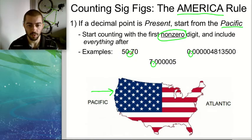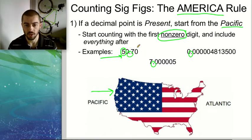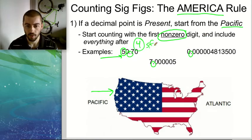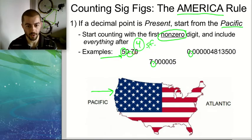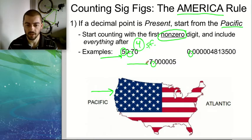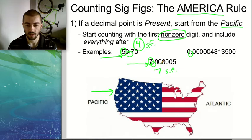Here we have a decimal place present, so we start from the Pacific and come in from the left side. The first number we hit is this five — that's non-zero, so we count it and count everything after. So this one would have four sig figs. For the second example, we come in from the left side, hit seven, and count everything after: seven plus these five zeros plus the five. That gives us seven sig figs total. As soon as we hit a non-zero digit like this seven, we start counting everything after, including the seven itself.